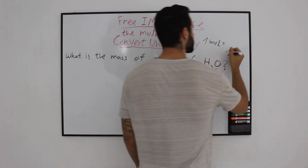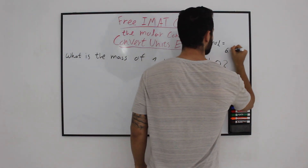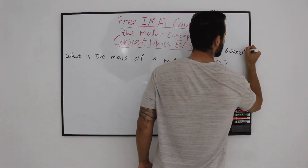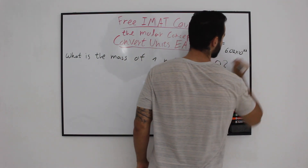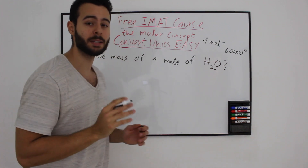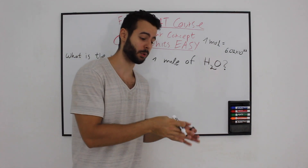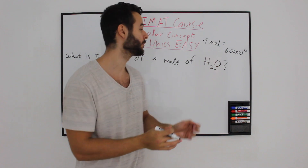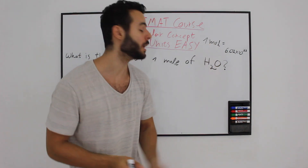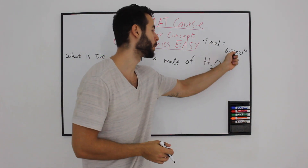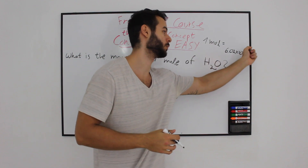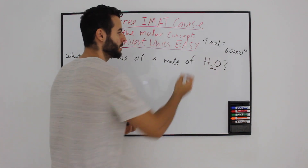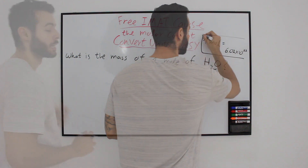As you know, one mole equals 6.02 times 10 to the 23. It means if you have a dozen of something, you have 12 of that something, but if you have a mole of that something, you have 6.02 times 10 to the 23 of that something. This is easy and you should know it by heart.